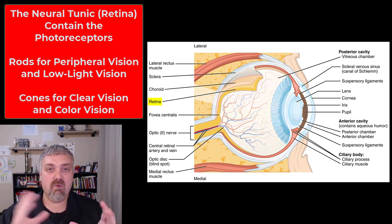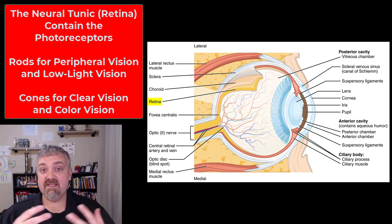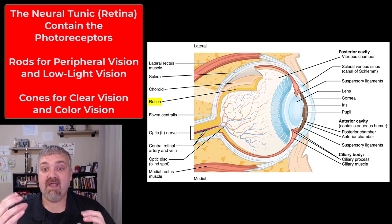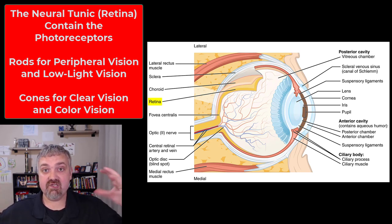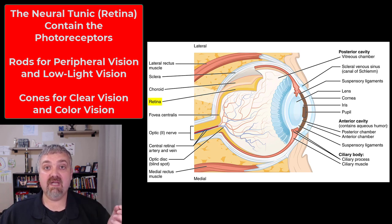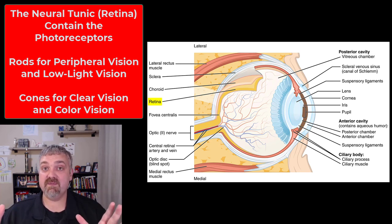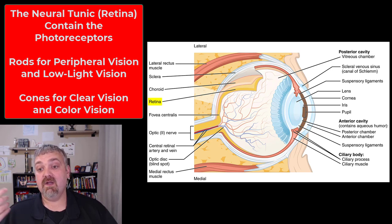Rods do not discriminate among colors — they see the world in grayscale — but they are highly sensitive to light. Rods are really good for peripheral vision because they are located on the edges of the retina, and they are excellent in low-light situations. They can track moving targets, though the images are fuzzy with no color discrimination. They are very important from a survival standpoint, especially in low light.